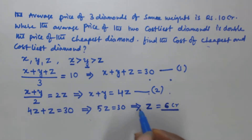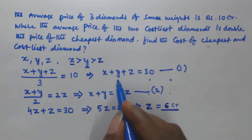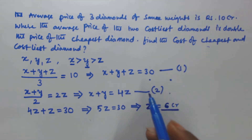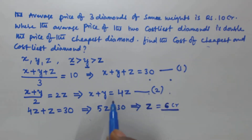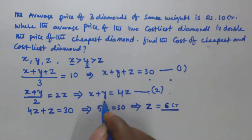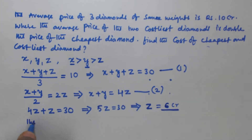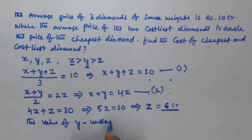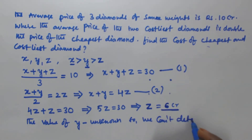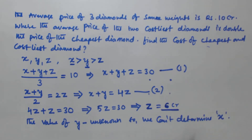Now we need to find the cost of the costliest diamond, which is x. By substituting z = 6 into x + y = 4z we get x + y = 24, but the individual value of y is not given. Since the value of y is unknown, we cannot determine x. Therefore, the cost of the costliest diamond cannot be determined.